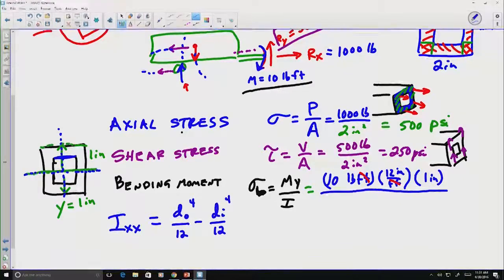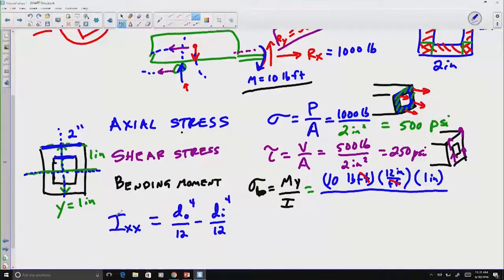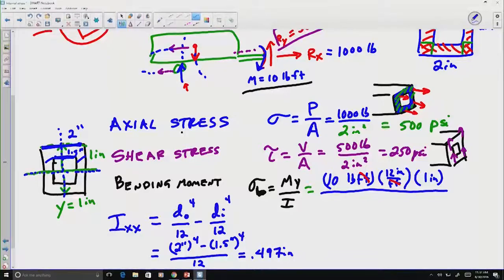Well, we know that our D outside is 2 inches and our D inside is going to be 2 inches minus the thickness twice, so that's going to be 1.5 inches because the thickness is a quarter inch on each side. So if I do that math, I get 2 inches to the fourth power minus 1.5 inches to the fourth power divided by 12. If I do that math, I get 0.497 inches to the fourth or roughly half an inch to the fourth.